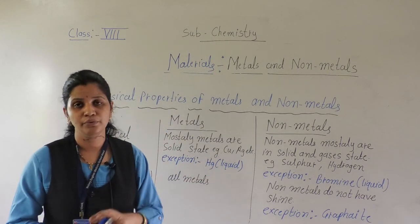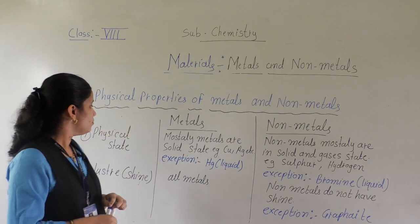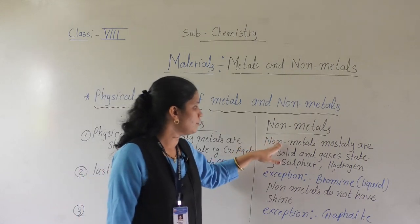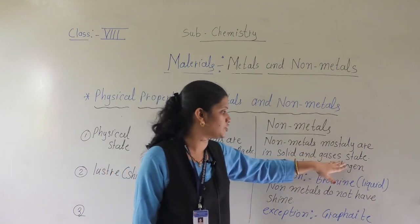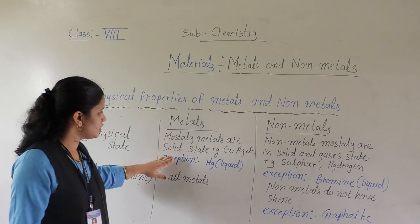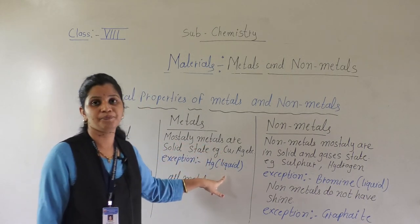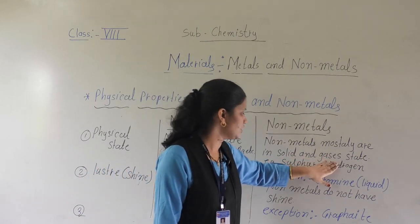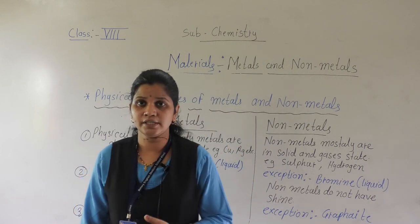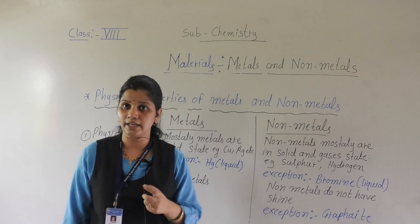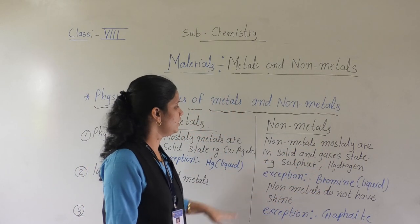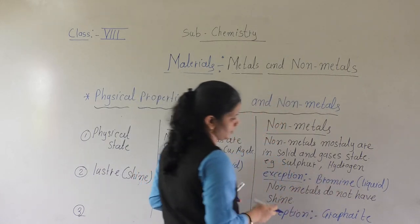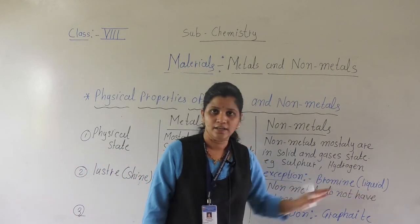Exceptions: Hg is liquid. Mercury is found in a thermometer, which we use. Related to non-metals — non-metals are mostly in solid and gaseous state. In metals, mostly are in solid state; only the exceptions are mercury and gallium. Non-metals are mostly in solid and gaseous state. Example: sulfur is in solid state, and hydrogen, nitrogen — these are gaseous. All non-metals are found in solid and gaseous state. Here also, some exceptional case is there — that is bromine, which is in a liquid state.